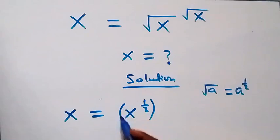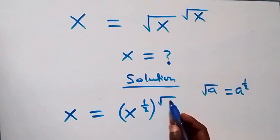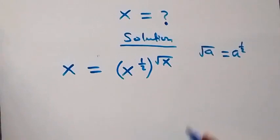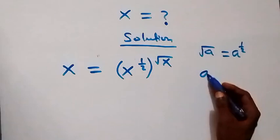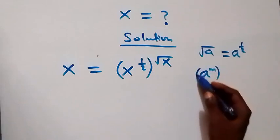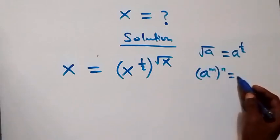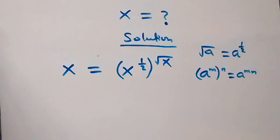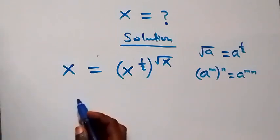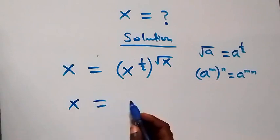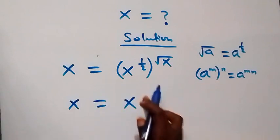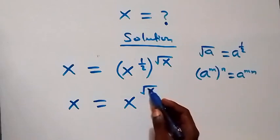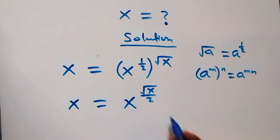Then raised to power root x. Applying the law of indices again: a raised to power m, raised to power n, is the same as a raised to power m times n. So the powers multiply, and we have x equals x raised to power half times root x, which is root x over 2.